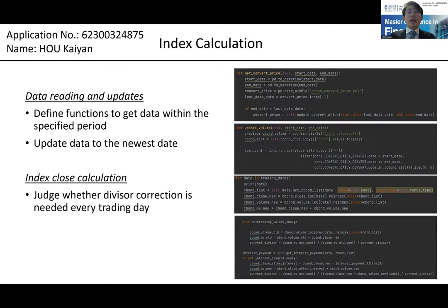Fifth, index calculation. I get the data for the specified time period initially and update it to the present time if needed. The first two pictures show part of the data reading and update. To compute the index close, I use a full loop and if-elif to judge whether divisor correction is needed for each trading date. The last two pictures are related to changes in outstanding volumes and interest payments.